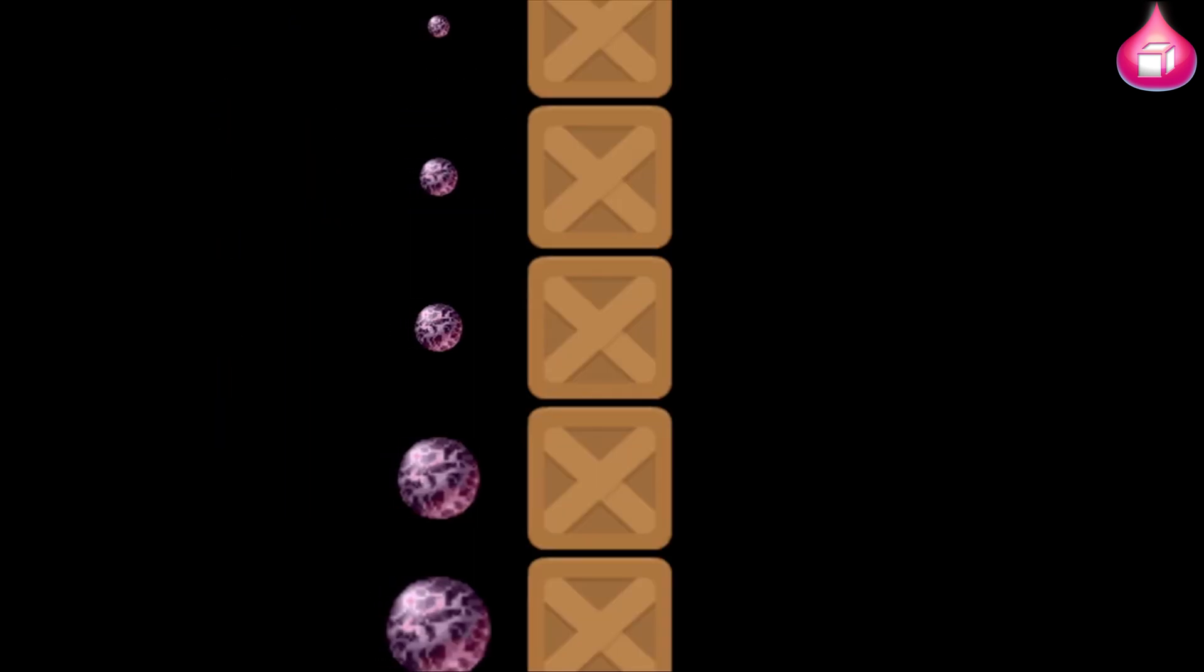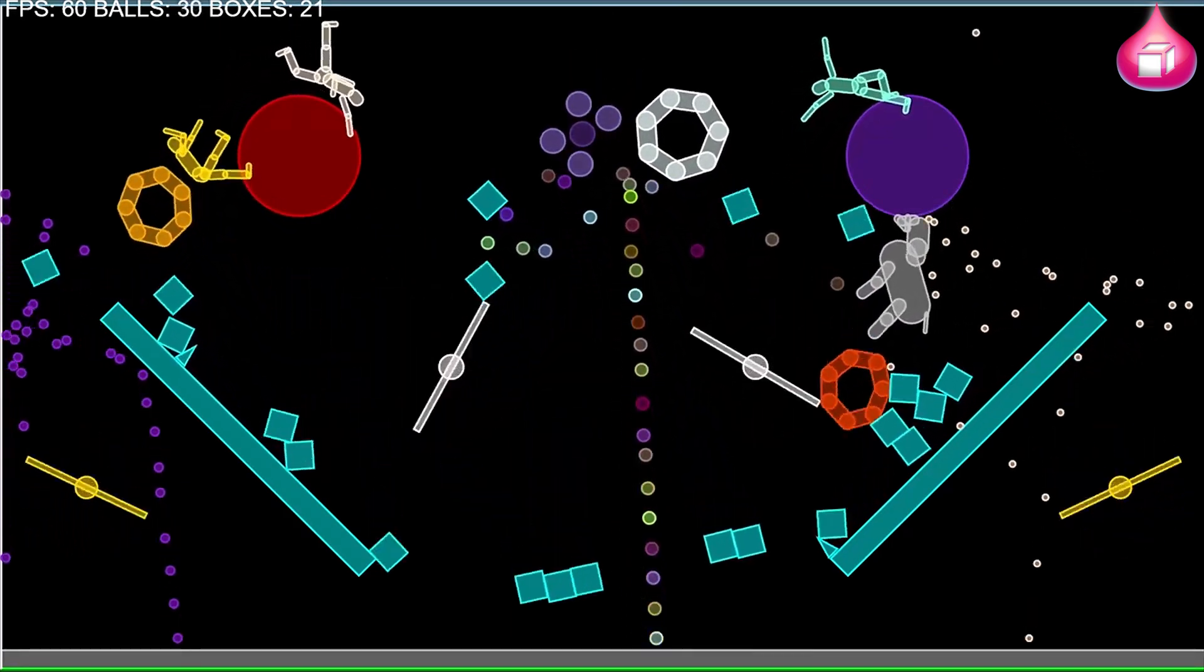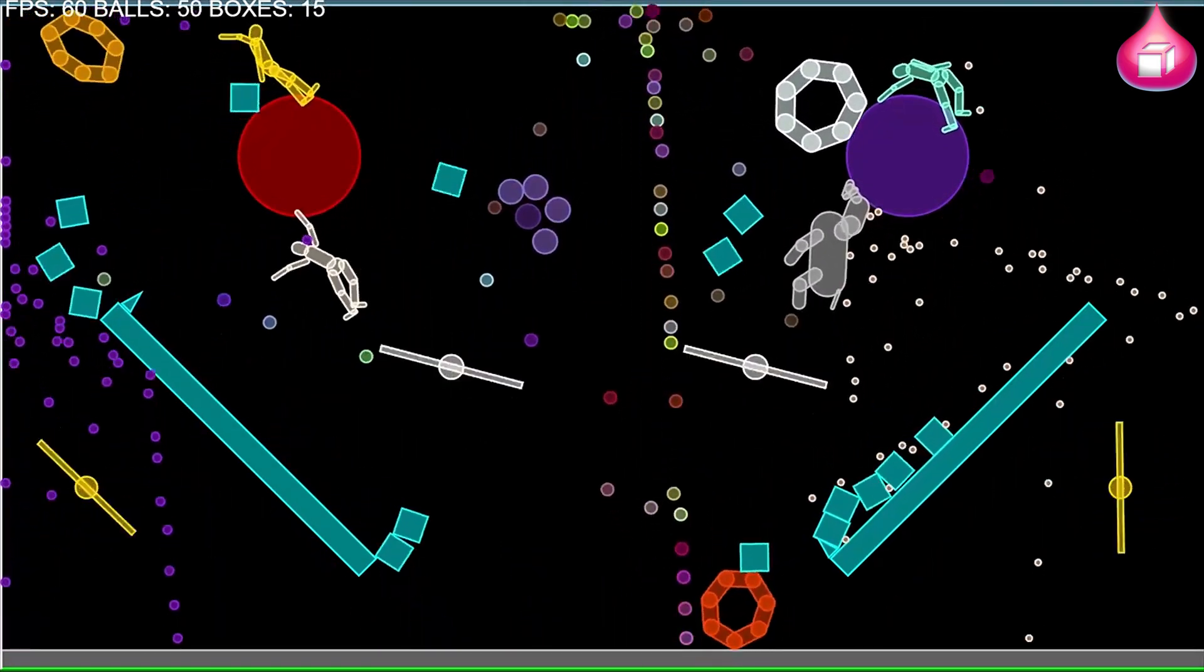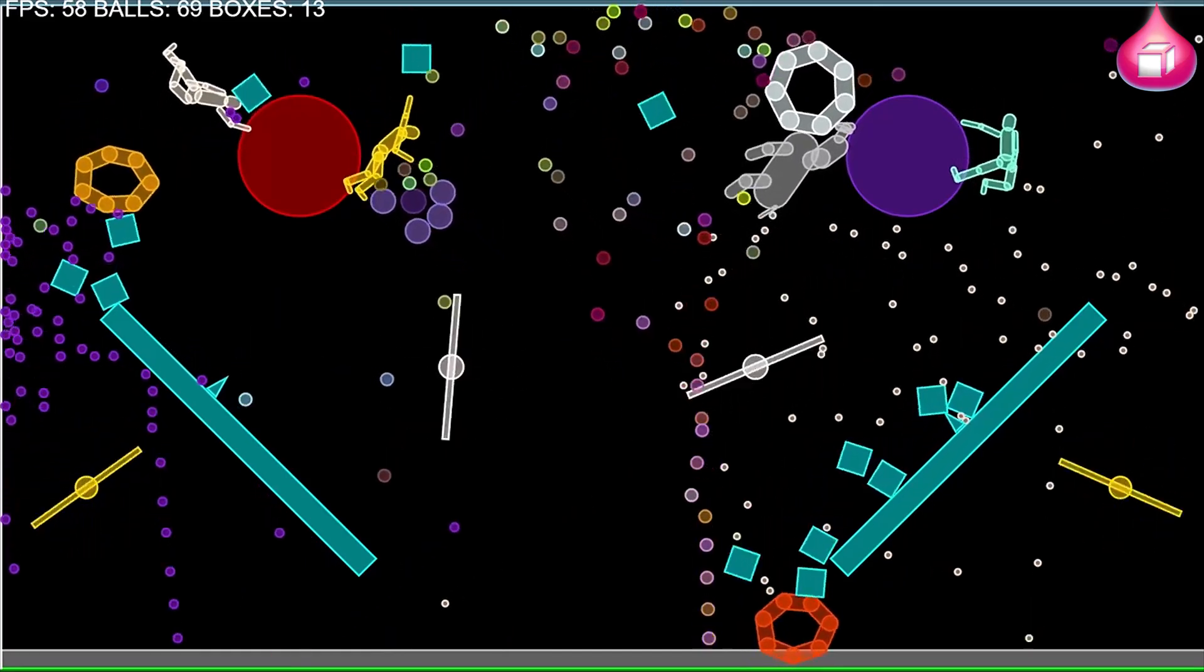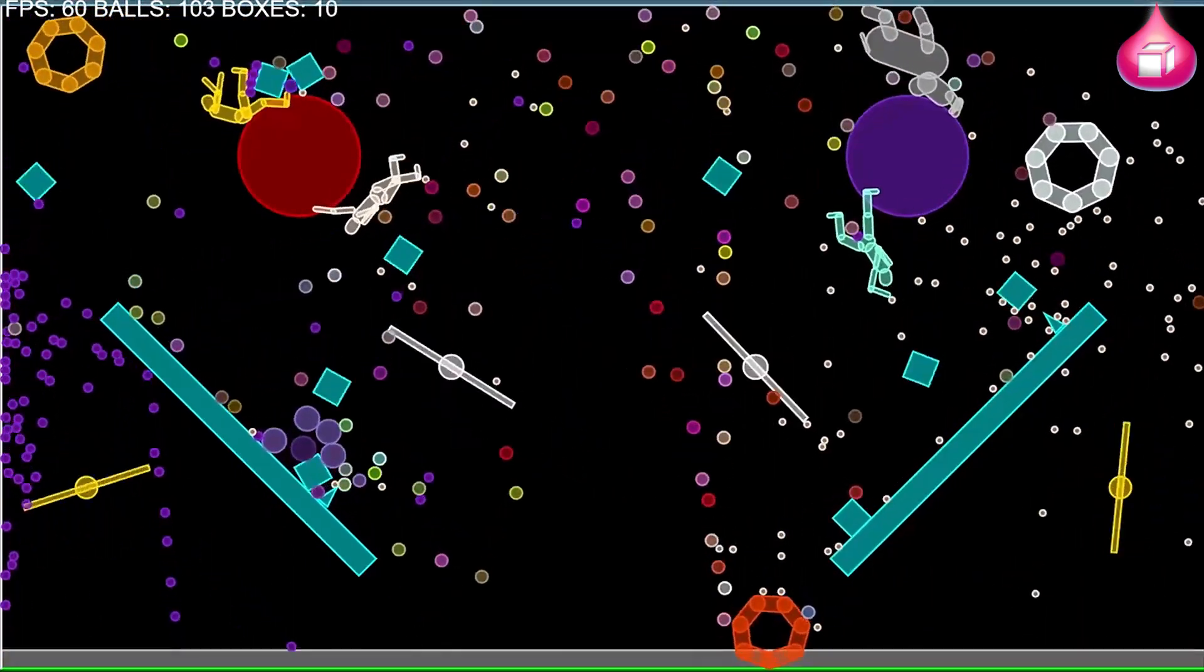If you've ever tried to manage high-speed objects—things like bullets, fast cars, or falling debris—you know how important precision is. That's why Box 2D version 3 includes a continuous collision detection system.